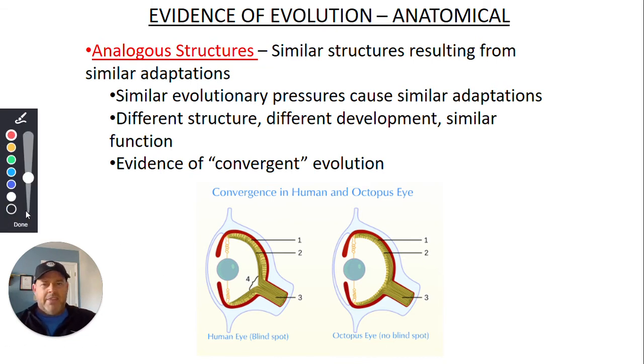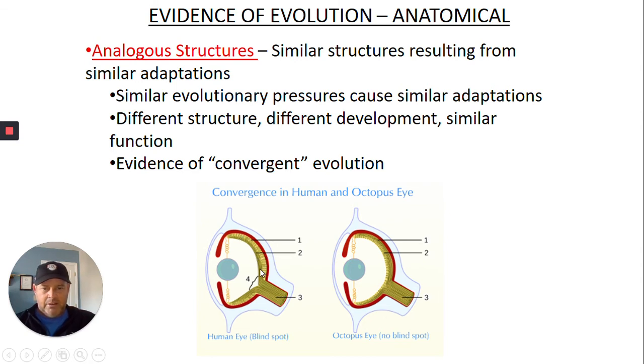So analogous structures are going to be similar structures resulting from similar adaptations. So similar evolutionary pressures cause the same adaptations to develop, kind of like convergent evolution. Different structure, different development, similar function. Evidence of convergent evolution, analogous structures are evidence of convergent evolution. If you look at the eye down here, you might think humans have the most developed eye and the most advanced eye. Here's our eye right here. The human eye. And then down here is the octopus eye as well. And so if you look in the human eye right back here at number four, where it has this bracket going across right here, you'll notice that there is no retina back there. Notice this is what comes in the back of our eye. That's our optic nerve, right? And so right here, we actually have a blind spot.